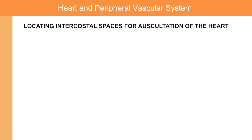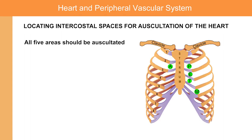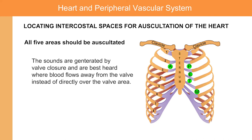Let's go over the technique for locating intercostal spaces for auscultation of the heart. All five areas should be auscultated. The sounds are generated by valve closure and are best heard where blood flows away from the valve, instead of directly over the valve area.